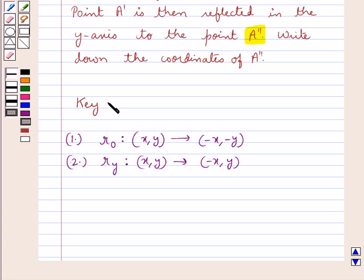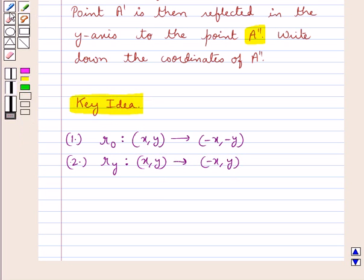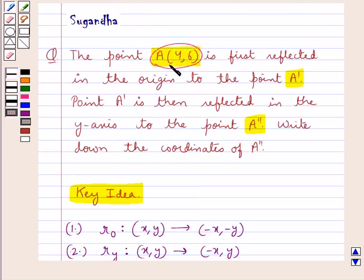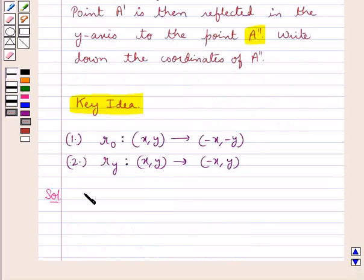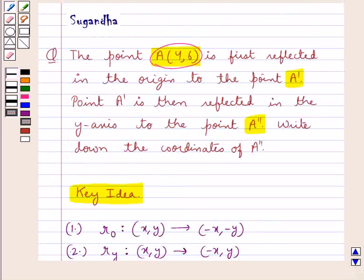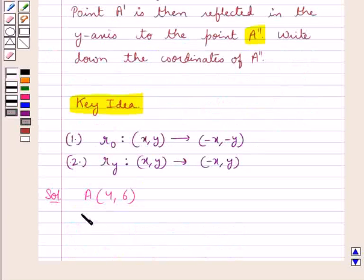This is the key idea that we use for this question. Let's proceed with the solution now. We are given point A with coordinates 4 and 6. It is first reflected in the origin to the point A dash. We assume that A dash has the coordinates x and y.